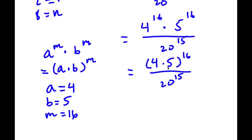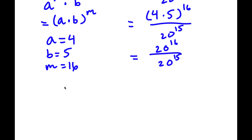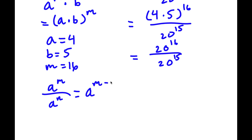Now 4 times 5 is equal to 20. So I have 20 to the power of 16 divided by 20 to the power of 15. Now another property of exponents is that if we have something in the form a to the power of m divided by a to the power of n, this is equal to a to the power of m minus n.